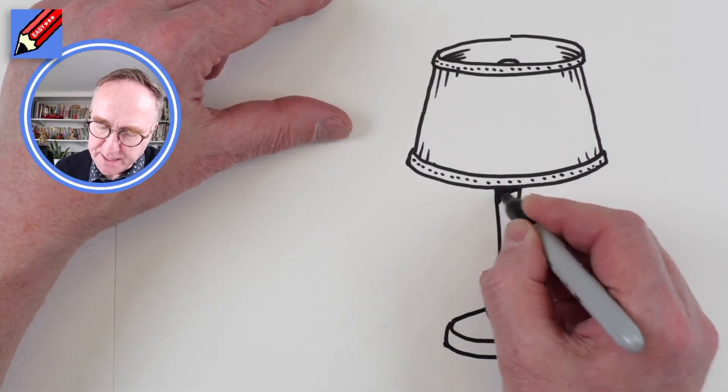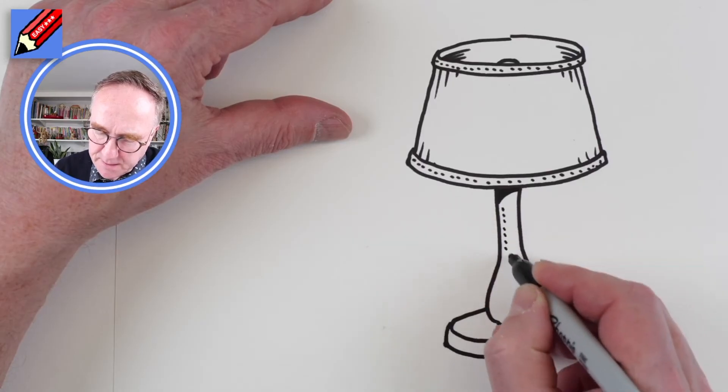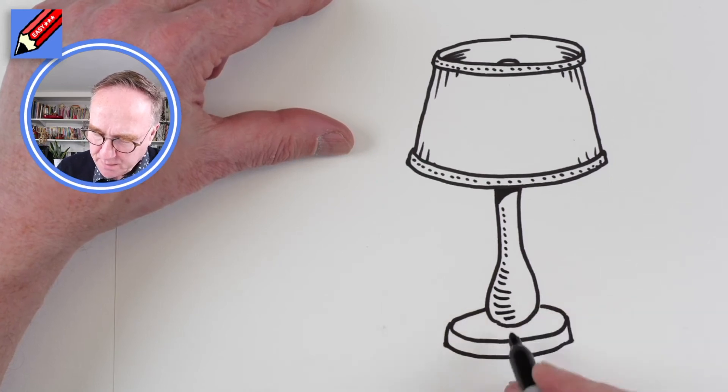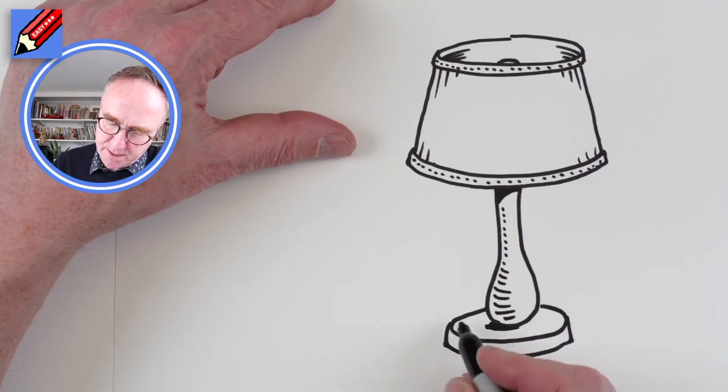I want a bit of shade like that, and we can have a little bit of shade around the base just to give it a bit of shape. Maybe a little bit of shadow there.